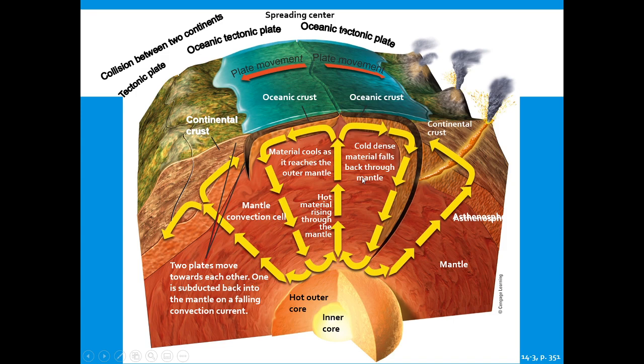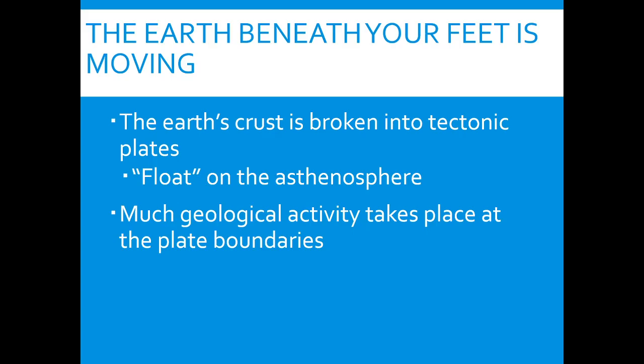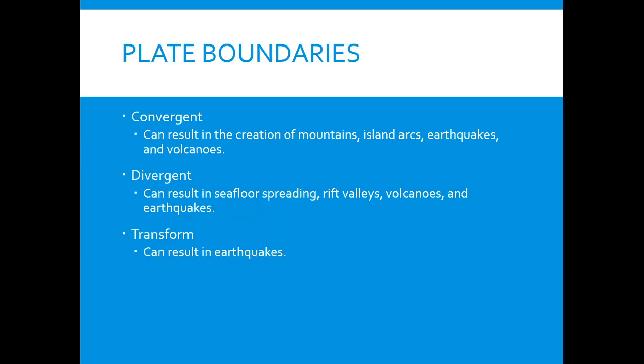We know that the Earth's crust is broken into tectonic plates — it is the theory of plate tectonics. We haven't taken the crust off the Earth to verify, but the evidence is there. The plates actually float on the asthenosphere, and most of the geological activity happens at the boundaries. There are three types of plate boundaries you need to be aware of: convergent, divergent, and transform.